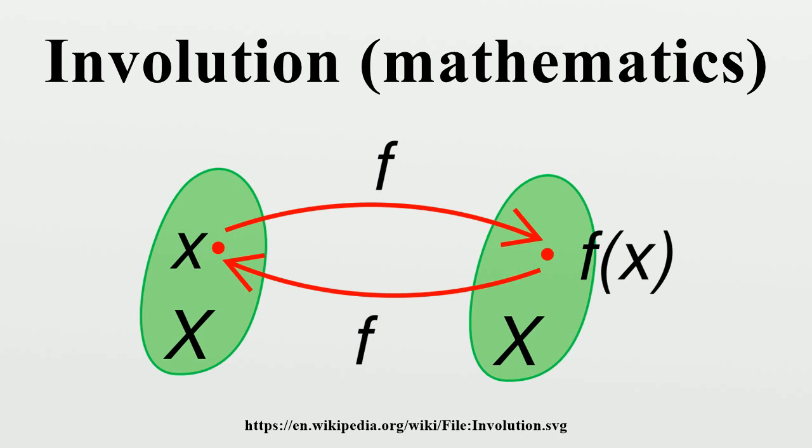Originally, this definition agreed with the first definition above, since members of groups were always bijections from a set into itself, i.e. group was taken to mean permutation group. By the end of the 19th century, group was defined more broadly, and accordingly so was involution.